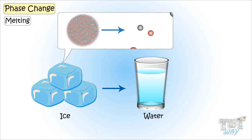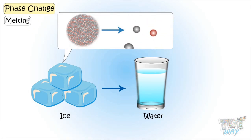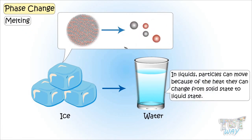As we know, in solids, particles cannot move and slide around each other, but in liquids they can. And because of the heat they get, they start moving, and we say solids changed to liquid.